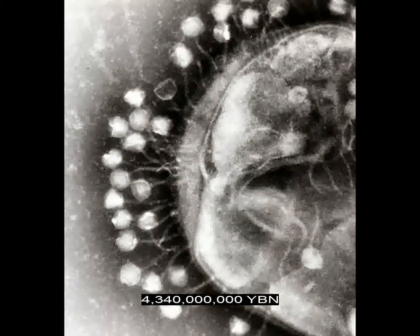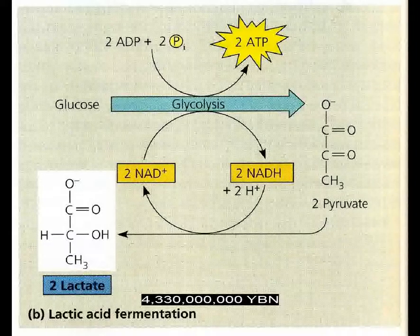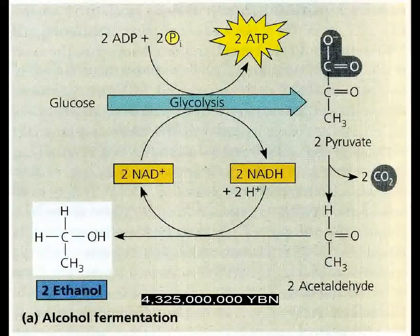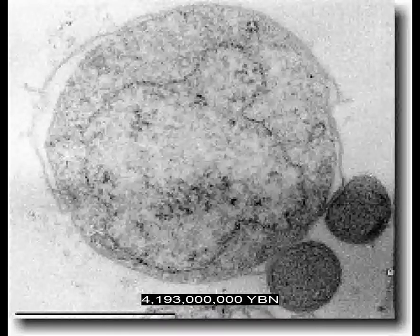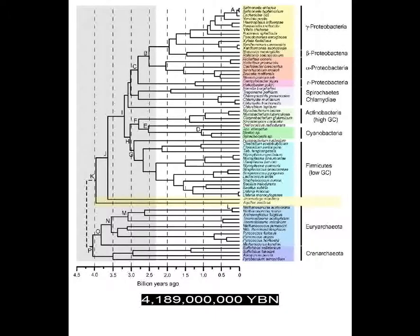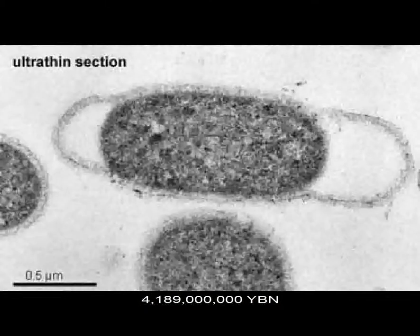The first virus evolves. Cellular respiration: glycolysis evolves. Cells can make ATP from glucose. Fermentation evolves. Cells can make lactic acid. Cells can make alcohol. Operons allow selective protein assembly. Archaea, also called archaebacteria, evolve. Bacteria hyperthermophiles evolve — Aquifex, Thermotoga.